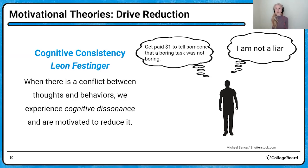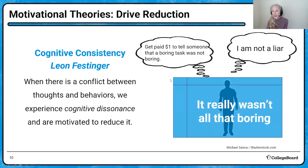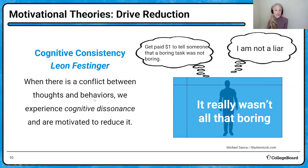Cognitive consistency theory was studied by Leon Festinger in a famous study where he paid people to lie about a boring task — some got paid $1, some got paid more. If you got paid $1 to tell someone that a boring task was not boring, and you don't think you're a liar, you're probably going to have some dissonance. Since you already took that dollar, you might think, maybe that task really wasn't that boring — you change your attitude towards that task.